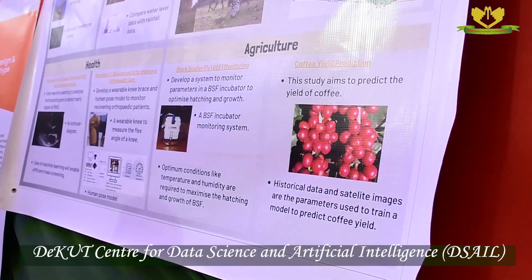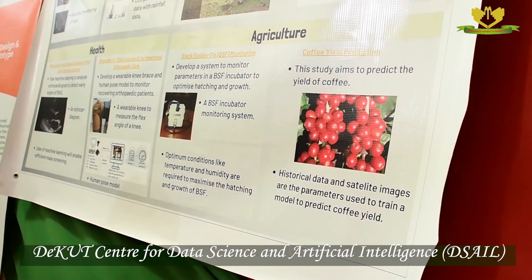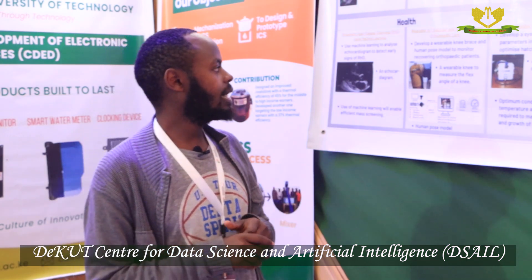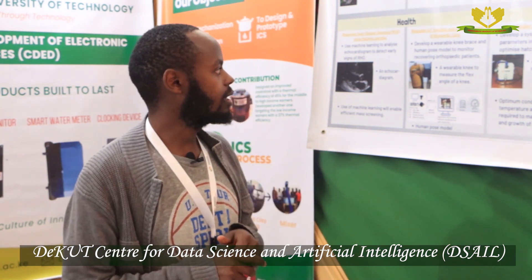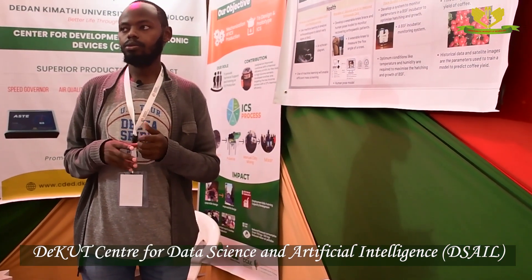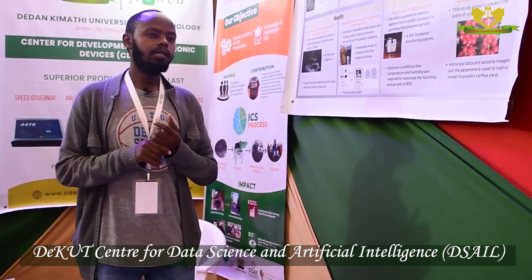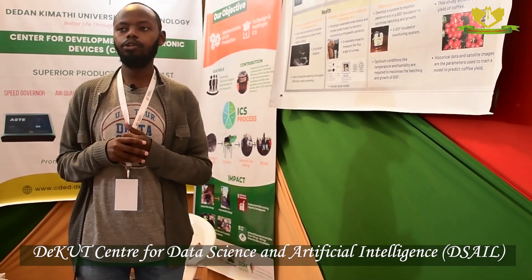The other area we work in is agriculture. We are doing coffee yield prediction using historical yield data, climate data, and satellite data. We have been working with the university's coffee farm to help the farm manager predict coffee yield in order to assess the status of the farm and make necessary preparations. We have also developed a black soldier fly monitoring system for tracking the development of black soldier flies, which are insects used to develop animal feeds. This system monitors the humidity and temperature of the incubators for optimum insect development and alerts the farmer about the real-time status of the incubator.